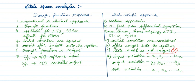In the transfer function approach, we use R(t) for input (reference input) and C(t) for output (controlled output). But in the state variable approach, input variables are u1, u2, ..., um — we use 'u' for input. Output variables are y1, y2, ..., yp — we use 'y' for output. State variables define the state of the system (what is inside), represented as x1, x2, ..., xn — we use 'x' for states. Throughout this lecture: u for input, y for output, x for state variables.